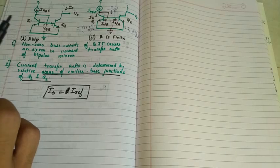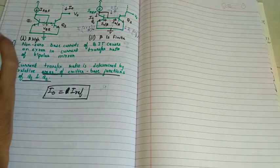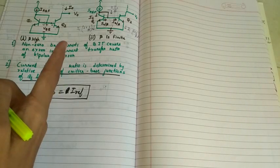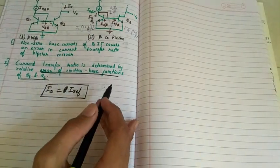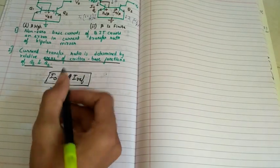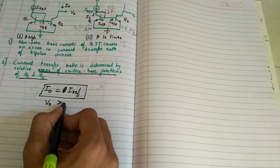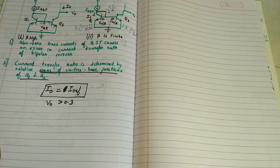One important point which we can't neglect is that in order to have this operation, Q2 must be operating in active mode. In MOS case we said it must be in saturation region, whereas here we say it is in active mode. This can be achieved only when V0 is greater than 0.3 or 0.2.